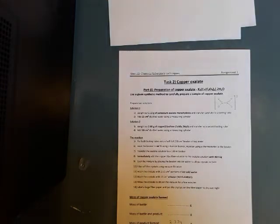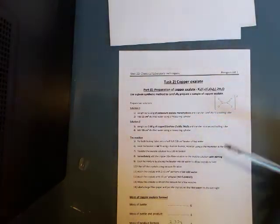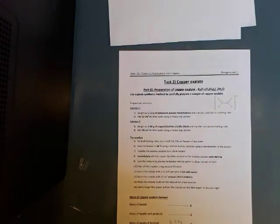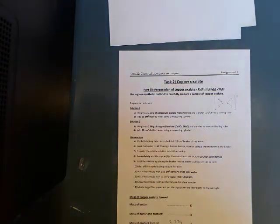Okay, so the first thing we have to do is, obviously, we're going to be using copper oxalate monohydrate. We're going to be adding 15 centimeter cubed of distilled water using a measuring cylinder. And then to that, separately, we're going to be weighing out two grams of copper sulfate and adding 10 centimeter cubed distilled water using a measuring cylinder.